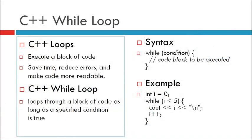C++ Loops. Loops can execute a block of code as long as a specified condition is reached. Loops are handy because they save time, reduce errors, and they make code more readable.